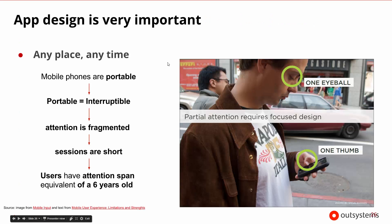When we design for mobile apps, we need to remember that it can be used at any place at any time. It is portable, so at any given moment we could get interrupted — we'll stop using the app or we'll be distracted. When our attention is fragmented, the session will be very, very short. In general, you have to think about creating apps that a six-year-old can use, and then your design will probably work for any user who might be distracted while walking down the street, working with your app with one thumb.